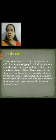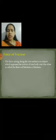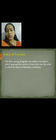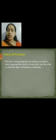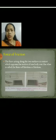All these forces are forces of friction. Now let us understand what is force of friction. The force acting along two surfaces in contact which opposes the motion of one body over the other is called the force of friction. Here the table is opposing the force that we applied on a book.